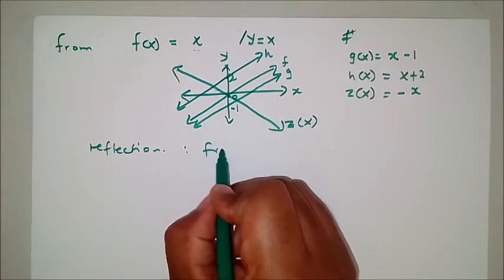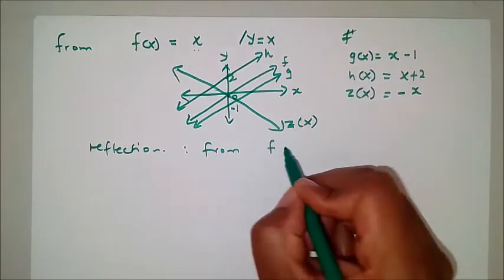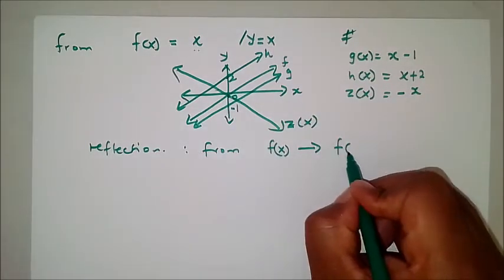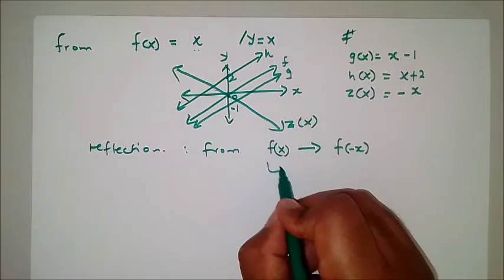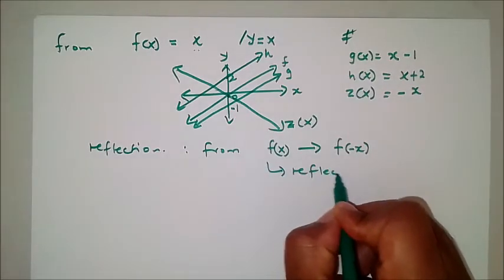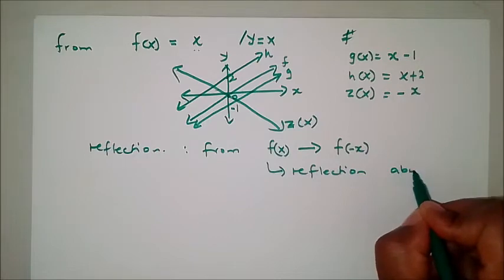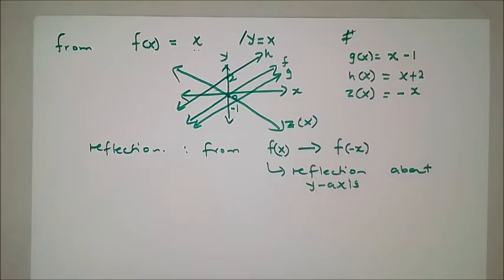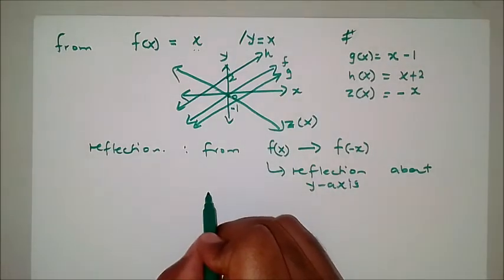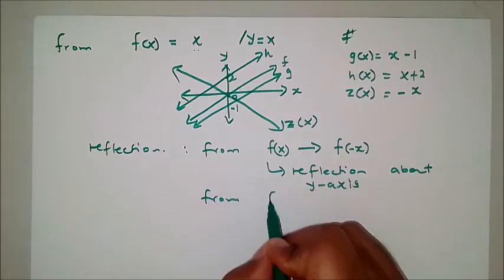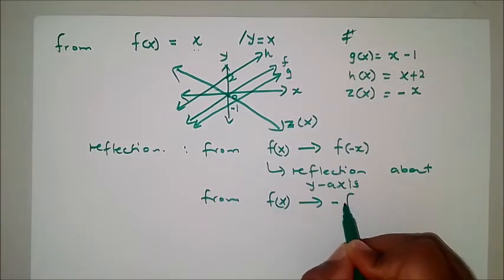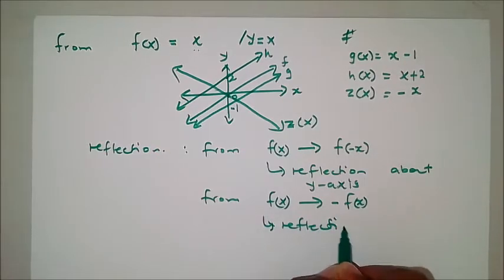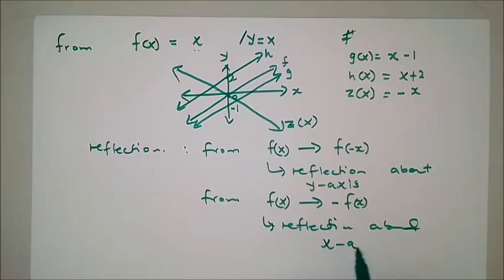To summarize reflections: from f(x) to f(-x) is a reflection about the y-axis. From f(x) to -f(x) is a reflection about the x-axis.